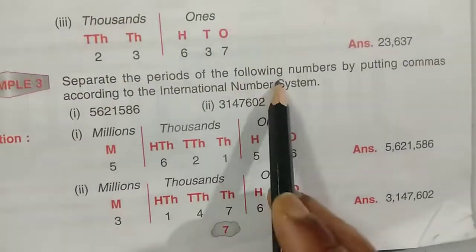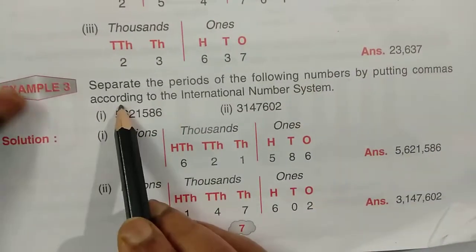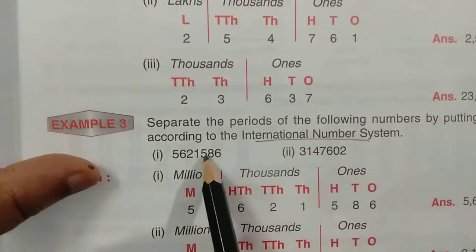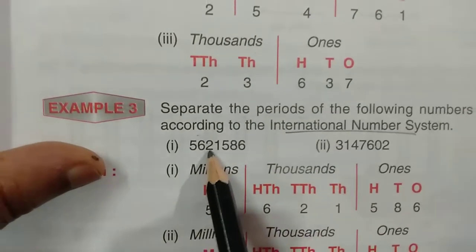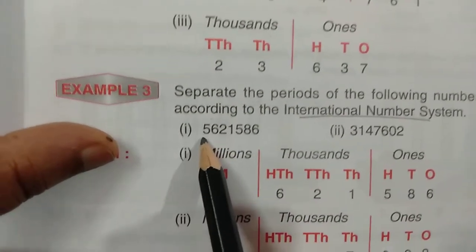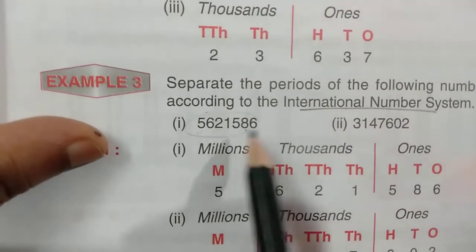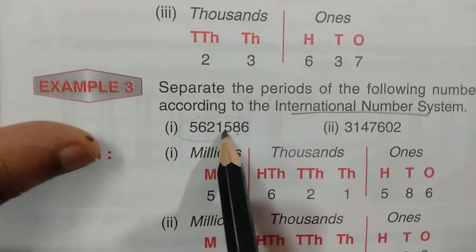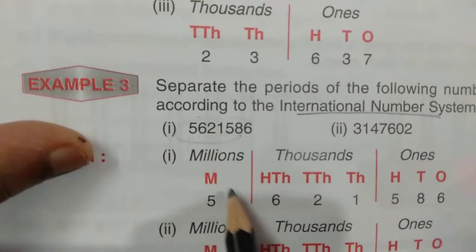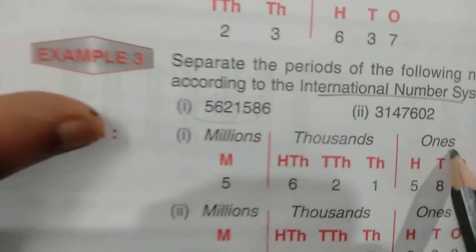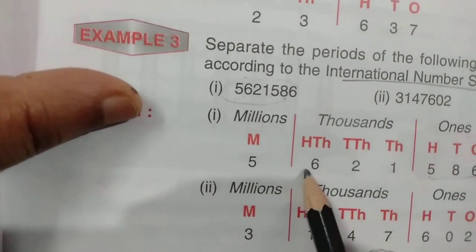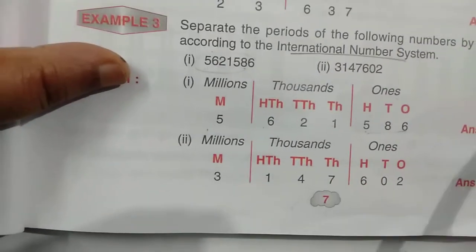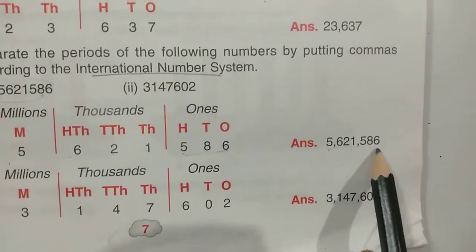Now the same way, separate the periods of the following numbers by putting commas according to the international number system. In international system: first three digits, then three, then the remaining. So the answer is five million, six hundred twenty-one thousand, five hundred eighty-six.